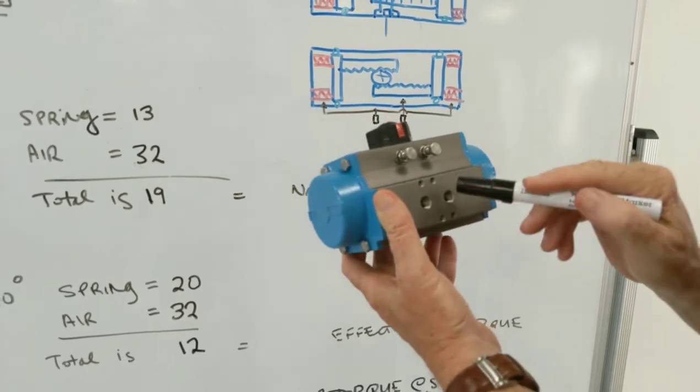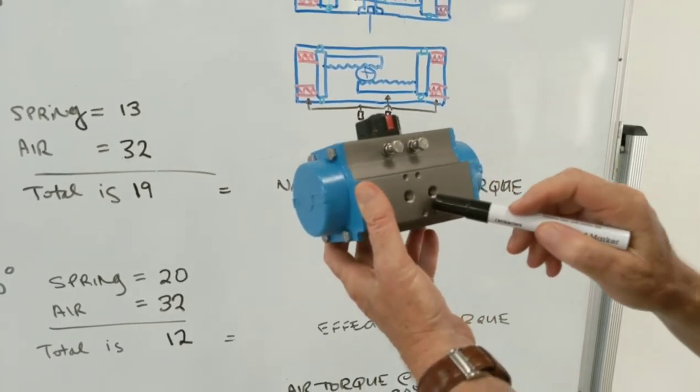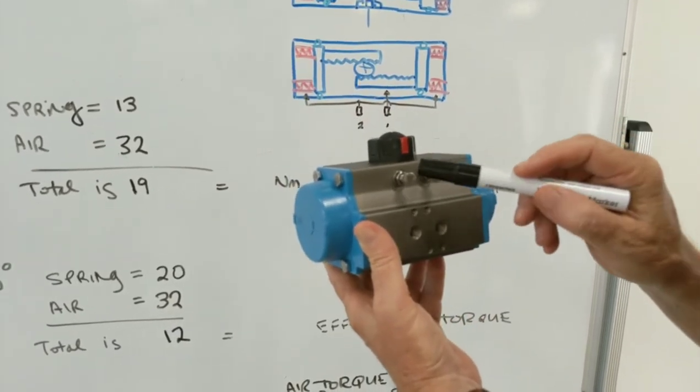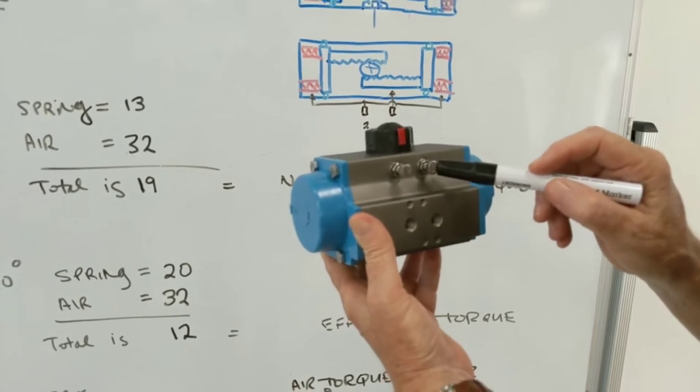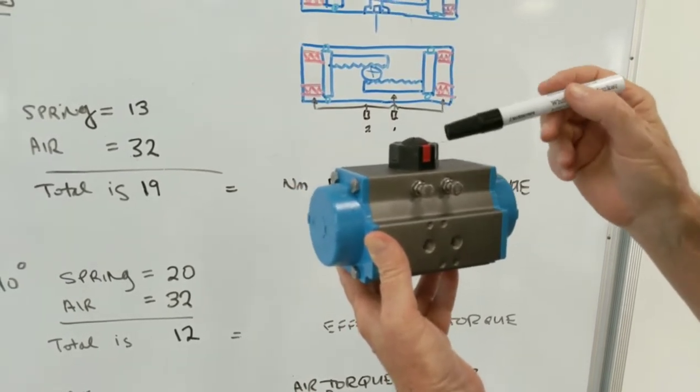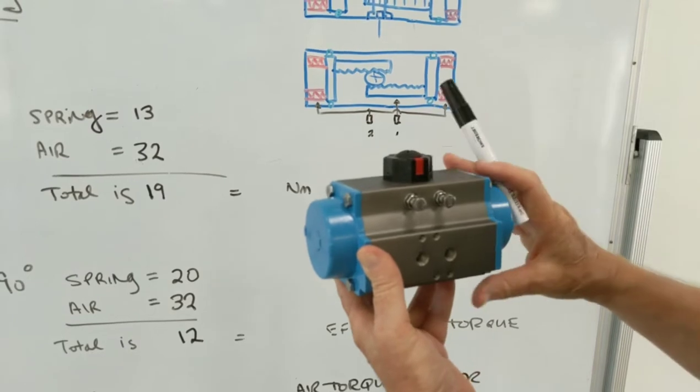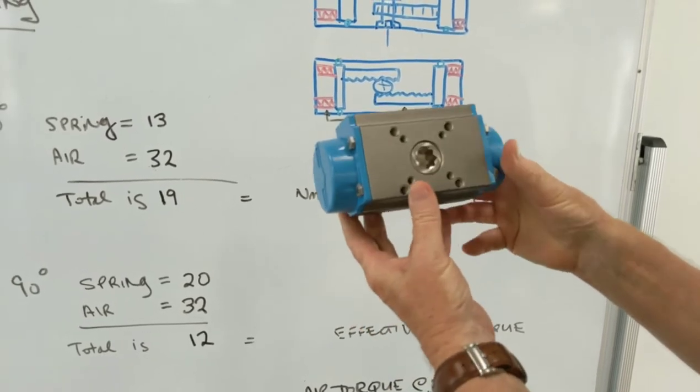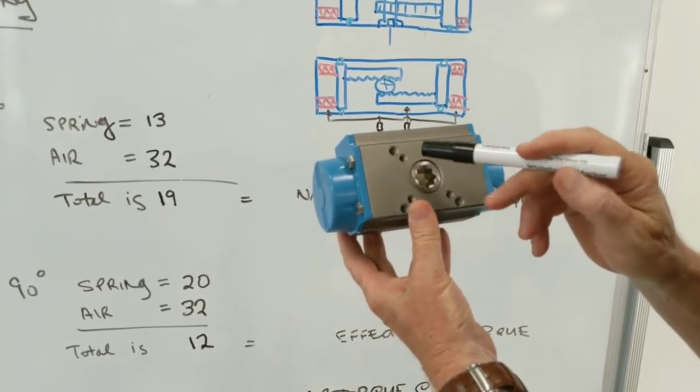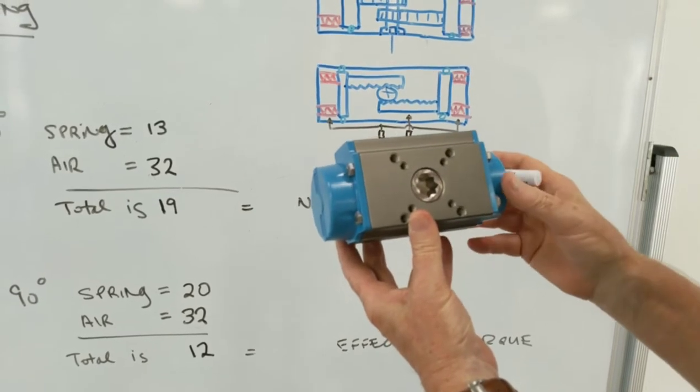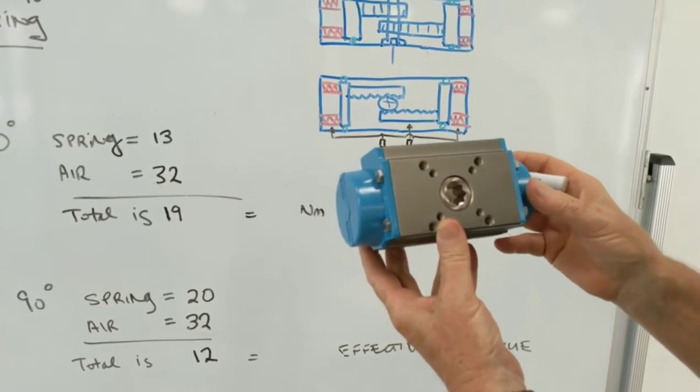It's got an interface with two ports here. There's mechanical stops for your 90 degree rotation, set from the outer limit. There's an indicator on the top and on the base there's a drive and an ISO interface for mounting onto your ball valve or butterfly valve.